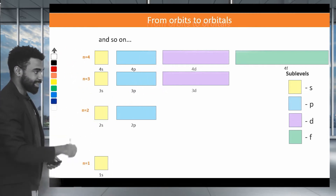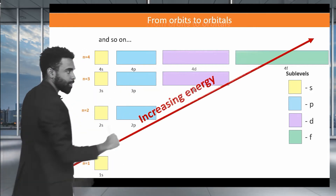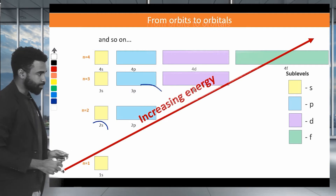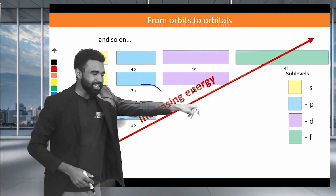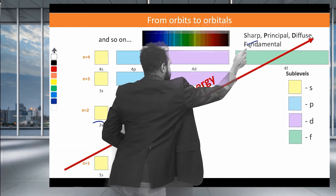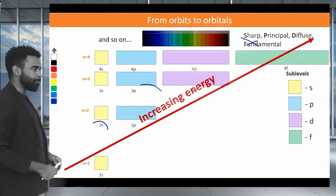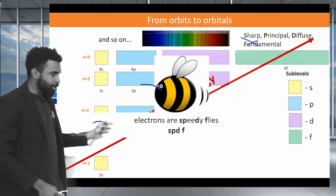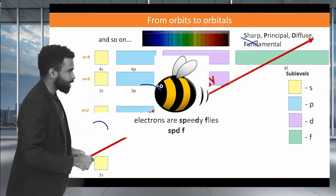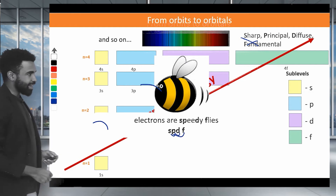Where do the letters S, P, D, and F come from? They come from the words sharp, principle, diffuse, and fundamental — descriptions of lines on emission spectra. You don't really need to think about their origin for the IB. A helpful mnemonic: electrons are like speedy flies — S, P, D, F. That helps you remember the order, where F is higher energy than D, which is higher energy than P, which is higher energy than S.